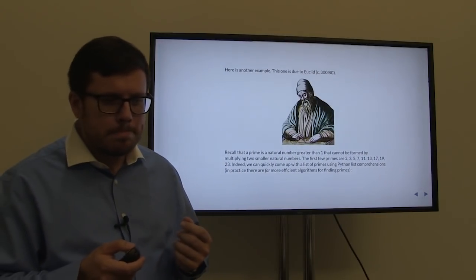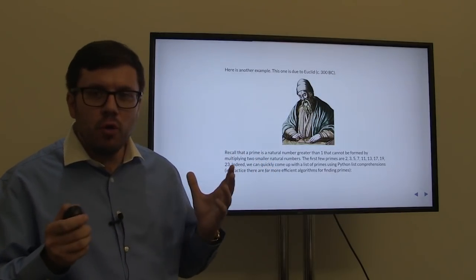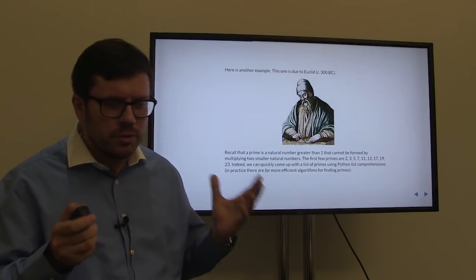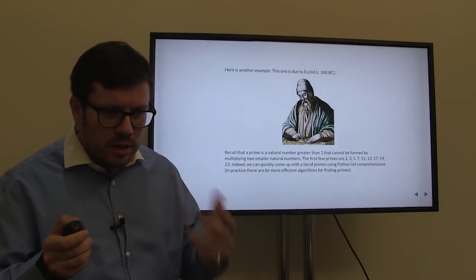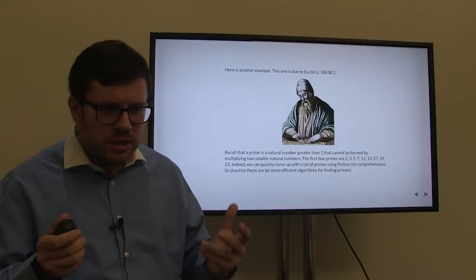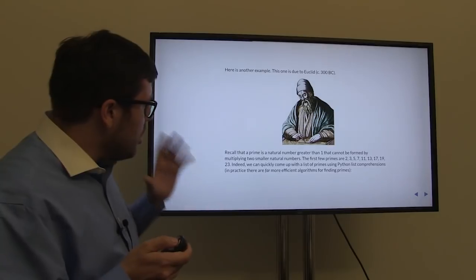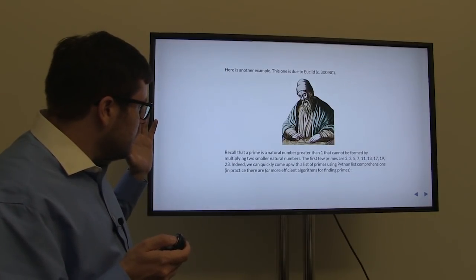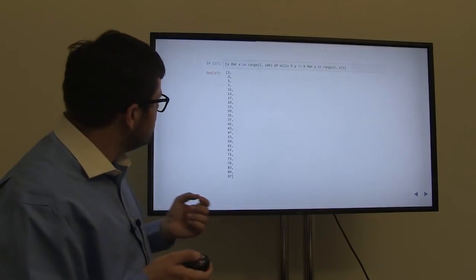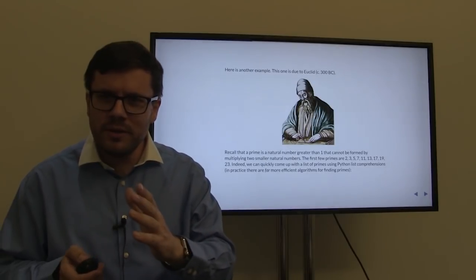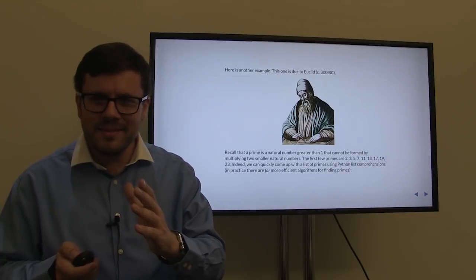Here is another example. Recall that a prime is a natural number greater than one that cannot be formed by multiplying two smaller natural numbers. The first few primes are 2, 3, 5, 7, 11, 13, 17, 19, 23, and so on. We can quickly use Python to come up with a list of even more primes. What's the prime after 23? It's 29, because 24 is divisible by 3, 25 by 5, 26 by 2, 27 by 3, 28 by 2 — so 29 is a prime.